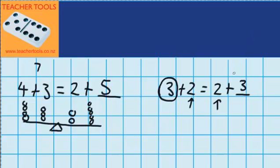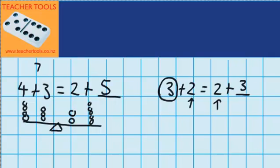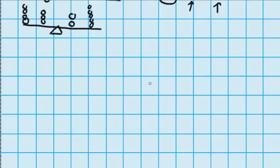So now you can see that we worked out this question without having to add up how much is on each side. Let's try another question. Let's try a bigger one. 73 plus 21 is equal to 74 plus something.